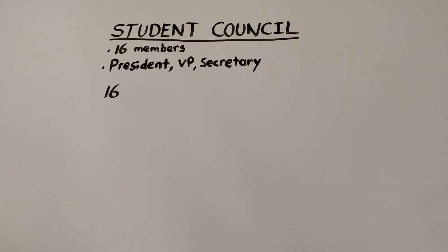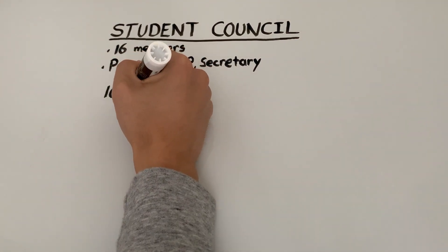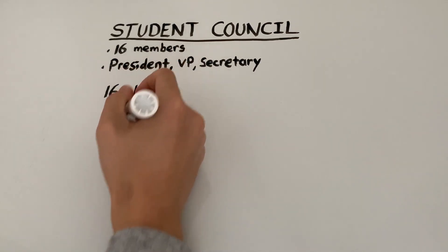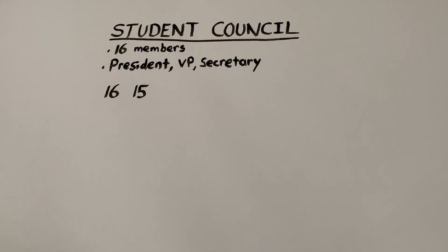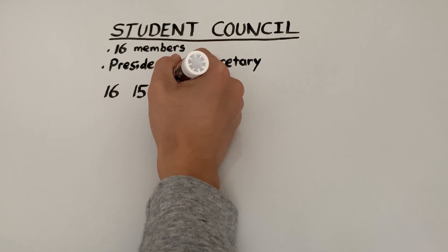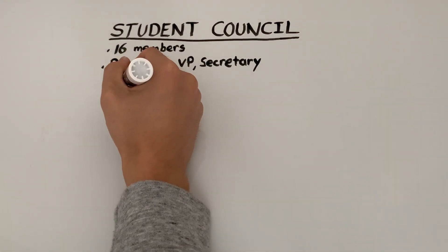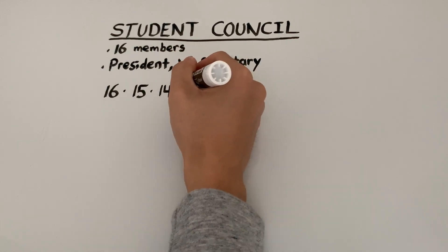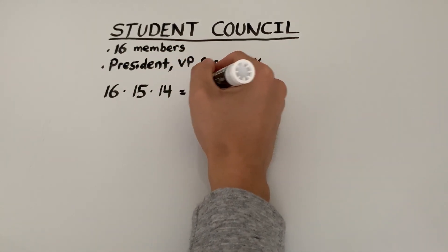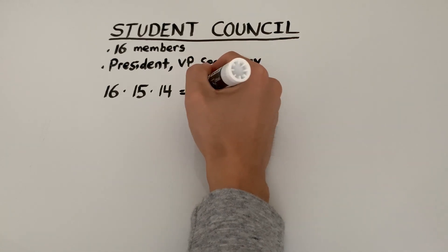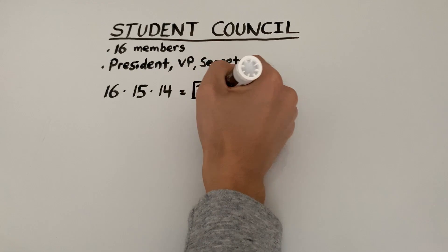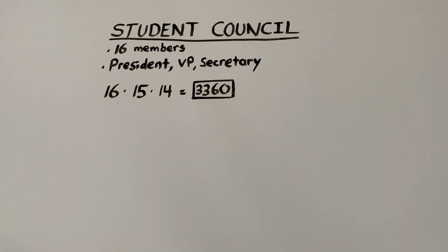This means there is one less choice for vice president, so there are 15 choices for vice president, and finally there would be one less option for secretary, so there are 14 choices for secretary. Overall, there would be 16 times 15 times 14, which is 3,360 ways that we can choose a president, a vice president, and a secretary from 16 members.